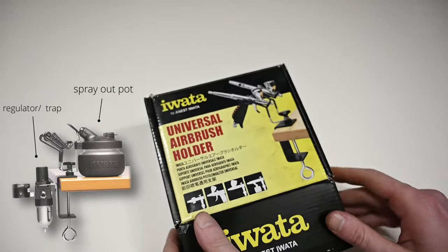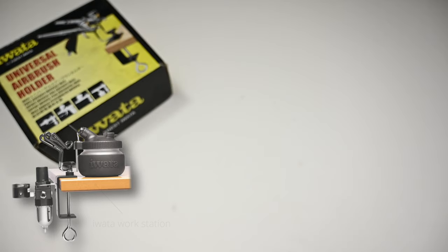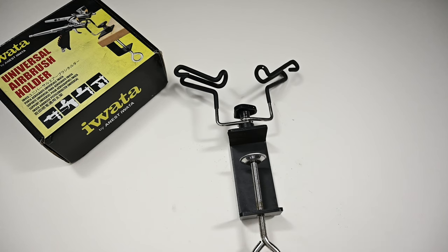If you connect all three of these, they call it the Iwata workstation. The two other things didn't interest me. Regulators and spray-out pots have been around for decades, so there's nothing new. So the only thing that I bought in this kit was this universal airbrush holder.